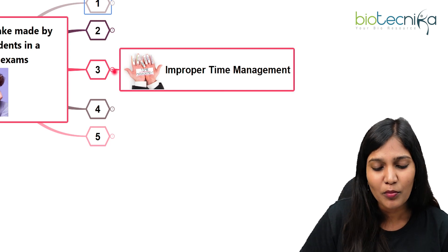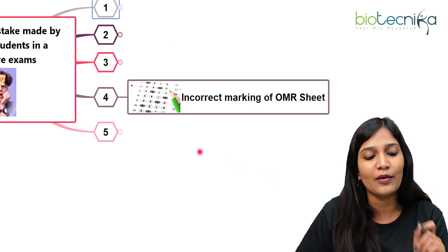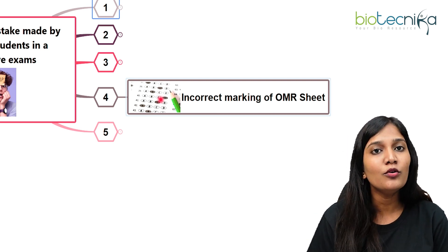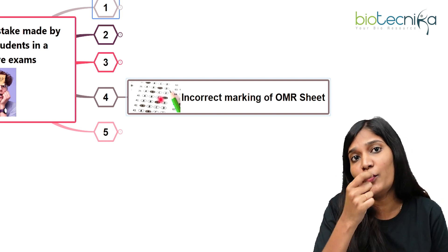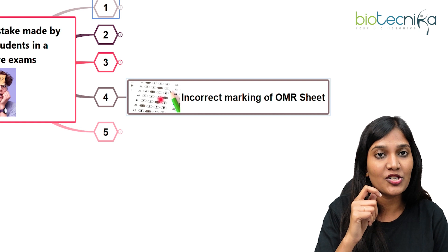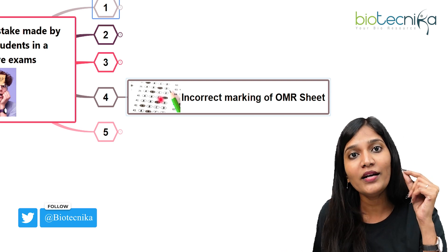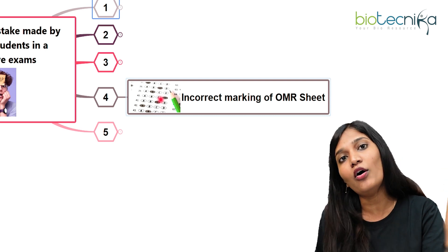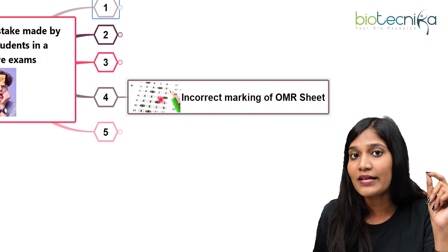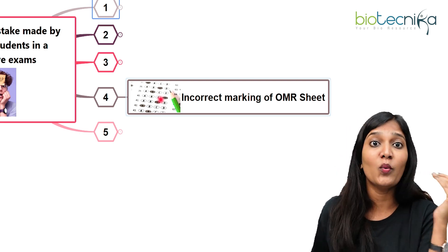The next common mistake is incorrect marking of the OMR sheet. This is the most important mistake — you might know all the correct answers, but if you skip marking a question, for example question 12, and answer question 13 in that row, all your subsequent answers will be shifted and go wrong. One mistake in the OMR sheet can literally invalidate all the answers you've marked. Always check that you're answering exactly onto the correct question number.